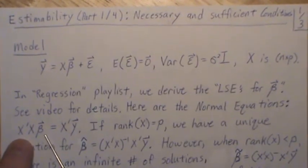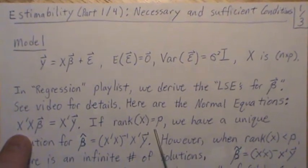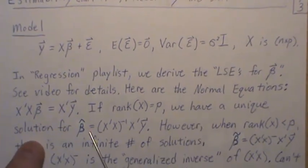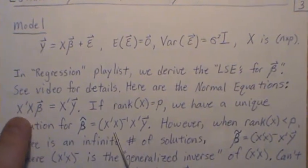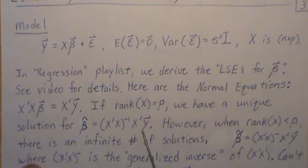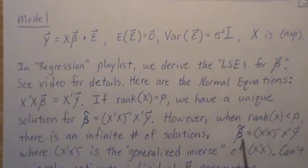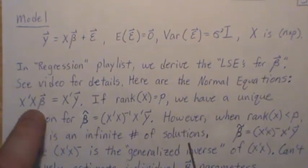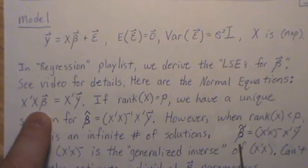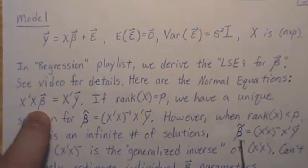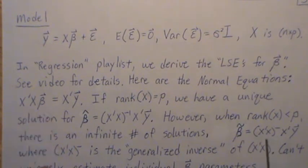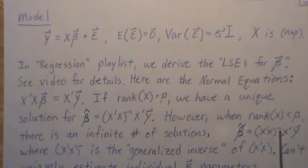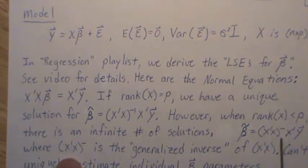So to solve for this: if the rank is p, meaning full column rank, we have a unique solution for beta — you just take the inverse of x transpose x on both sides and you get this. However, when the rank of x is less than p, there's an infinite number of solutions. One of them is the least squares estimate: x transpose x generalized inverse times x transpose y, where this is the generalized inverse.